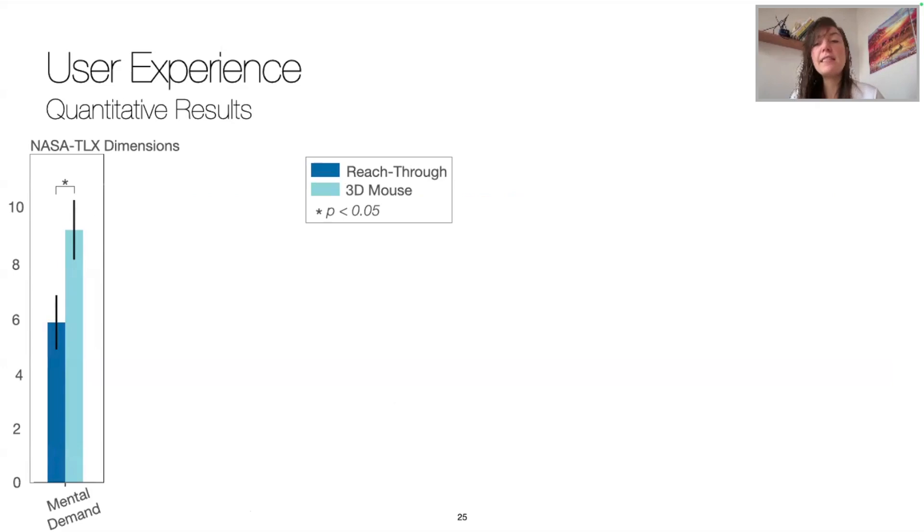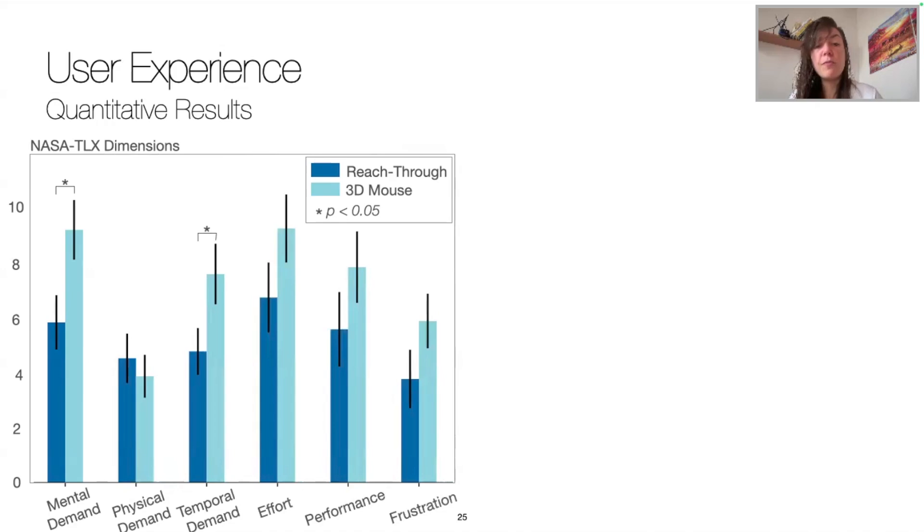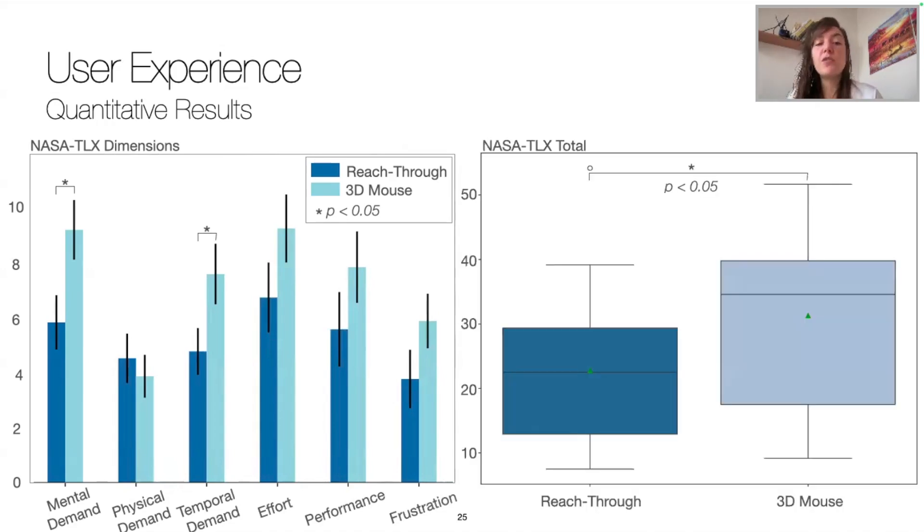Finally, when analyzing the NASA TLX per dimension, the mental demand was significantly higher with the 3D mouse, as per the temporal demand. Effort, frustration, performance were also perceived as worsened with the mouse. More globally, the reach-through modality was significantly less cognitively demanding than the 3D mouse.